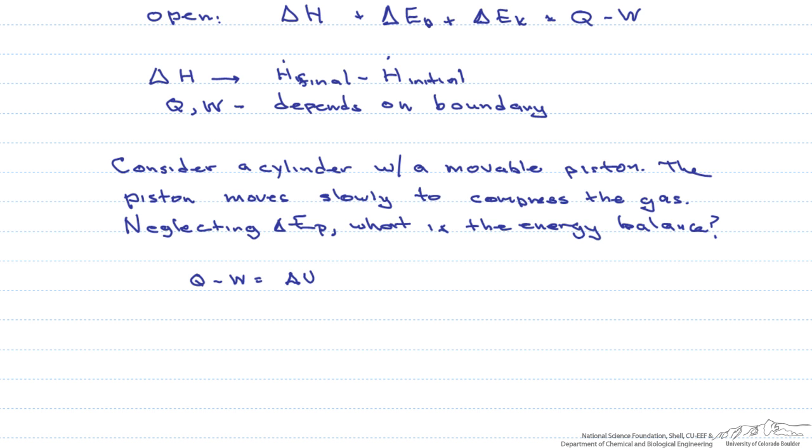Now, let's say that this is carried out, instead, isothermally. If that is the case, then delta U will equal zero, and we are left with that Q equals W.